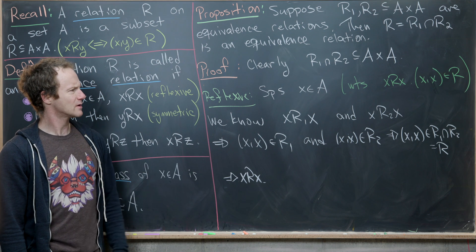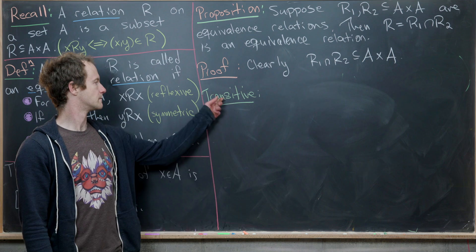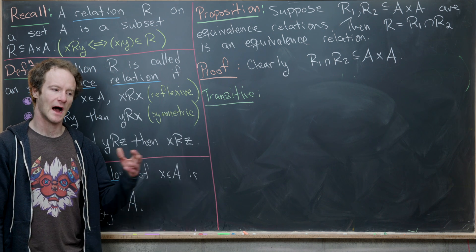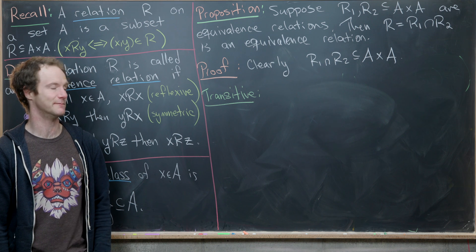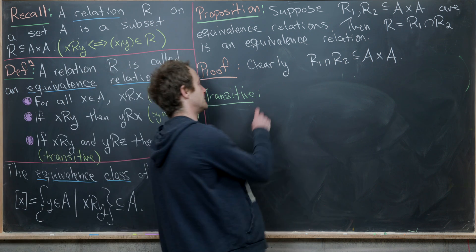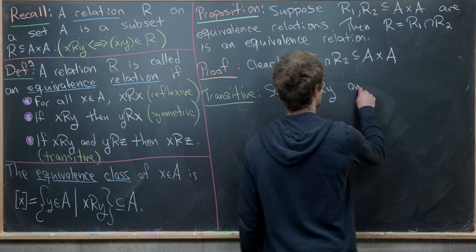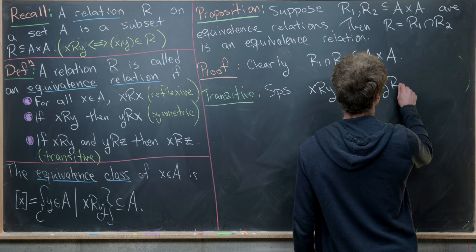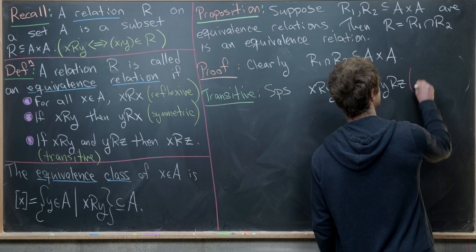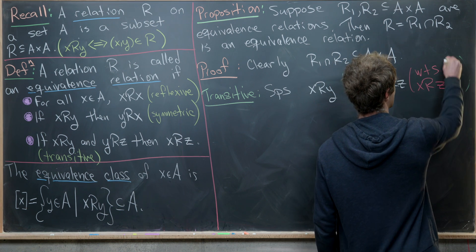Symmetry is left as a homework exercise. For transitivity, suppose x is related to y and y is related to z under R. We want to show that x is related to z. We push this into the set world to make use of the definition of intersection.